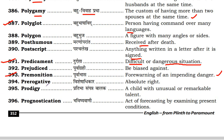Next is prerogative. Prerogative is a special or absolute right. Next is prodigy — a child with unusual or remarkable talent.